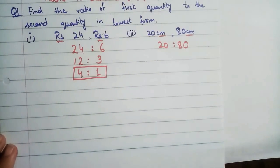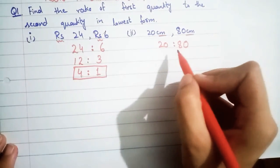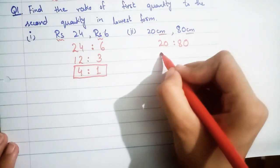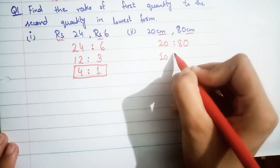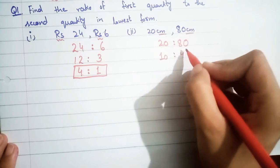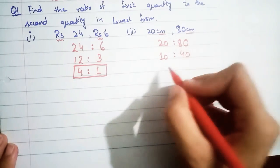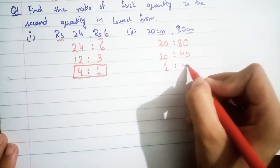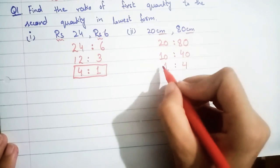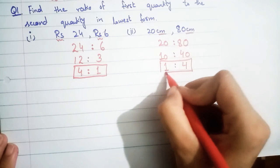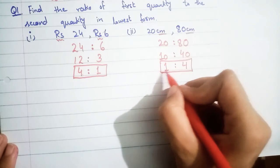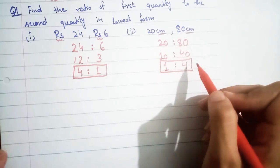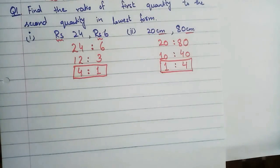We simplify 20 : 80 by dividing both by 20: 20 ÷ 20 = 1 and 80 ÷ 20 = 4. The answer is 1 : 4. Remember that ratio is not commutative, so you cannot write 4 : 1 instead — the order matters.